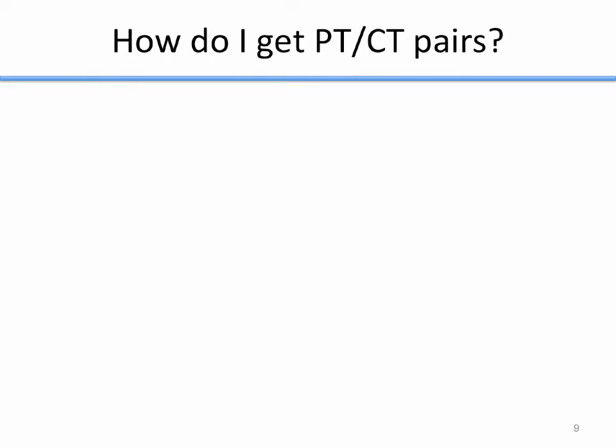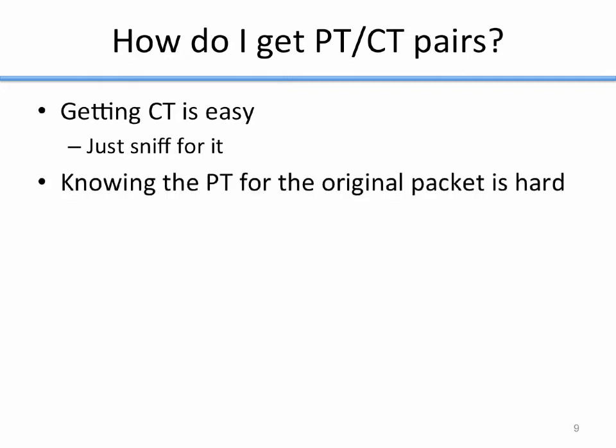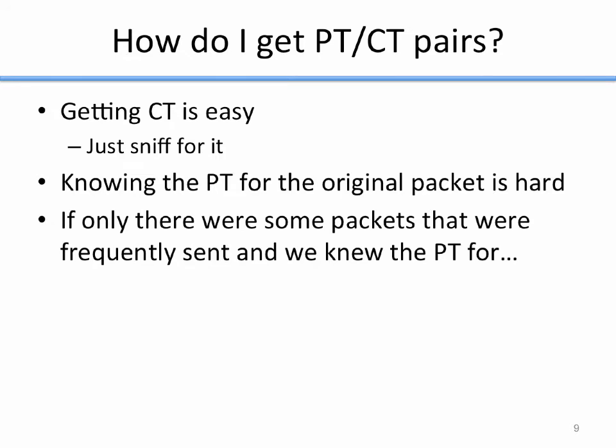In the real world, where someone has WEP on a router, how do I get plaintext/ciphertext pairs? Getting ciphertext is easy — I can just sniff for it. I put my wireless card in monitor mode and listen, dumping whatever packets I see. But how do I learn the corresponding plaintext? That can be harder. What I really want is some packet that's frequently sent over the wireless that I know the plaintext for. There is one, and it's ARP.